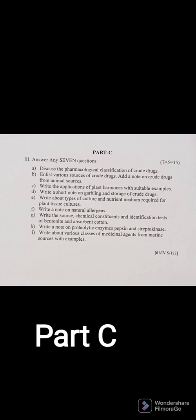Part C Question 3: Write the applications of plant hormones with examples. Plant hormones include auxin, gibberellin, cytokinin, abscisic acid, and ethylene. Write their examples — such as indole acetic acid for auxin — and how their role is playing in plant growth: elongation, cell multiplication, and all those things.